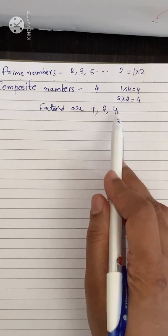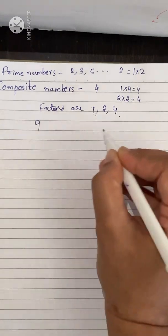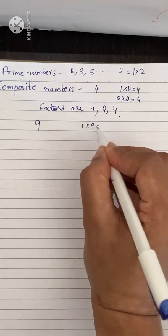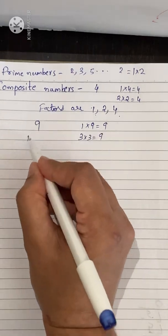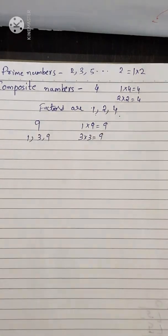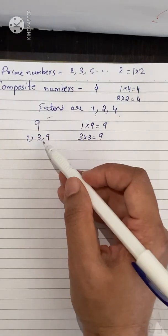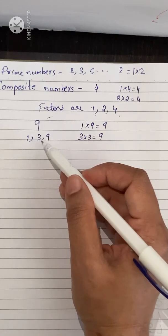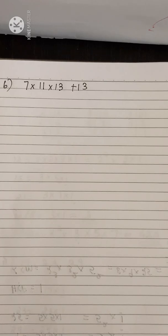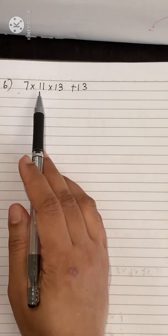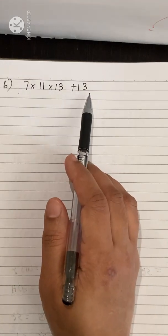For example, take 9: the factors are 1 into 9 = 9 and 3 into 3 = 9, so the factors are 1, 3, and 9 — more than two factors. Numbers with more than two factors are called composite numbers. We are going to show that the given expressions are composite numbers.